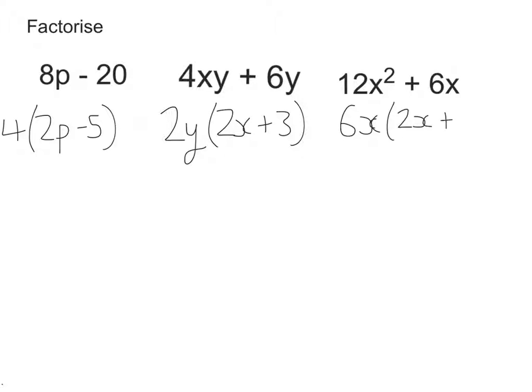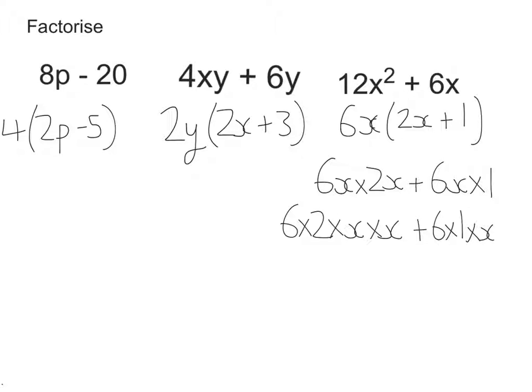6x divided by 6x. Well, 6 divided by 6 is 1. x divided by x is also 1. So it's 2x plus 1. Now let's just check this last one by expanding it. So I would be looking for 6x times 2x plus 6x times 1. So I've got 6 times 2 times x times x plus 6 times 1 times x. So 6 times 2 is 12. x times x is x squared. Plus 6 times 1 is 6. Times x is x. So that's 6x as expected.